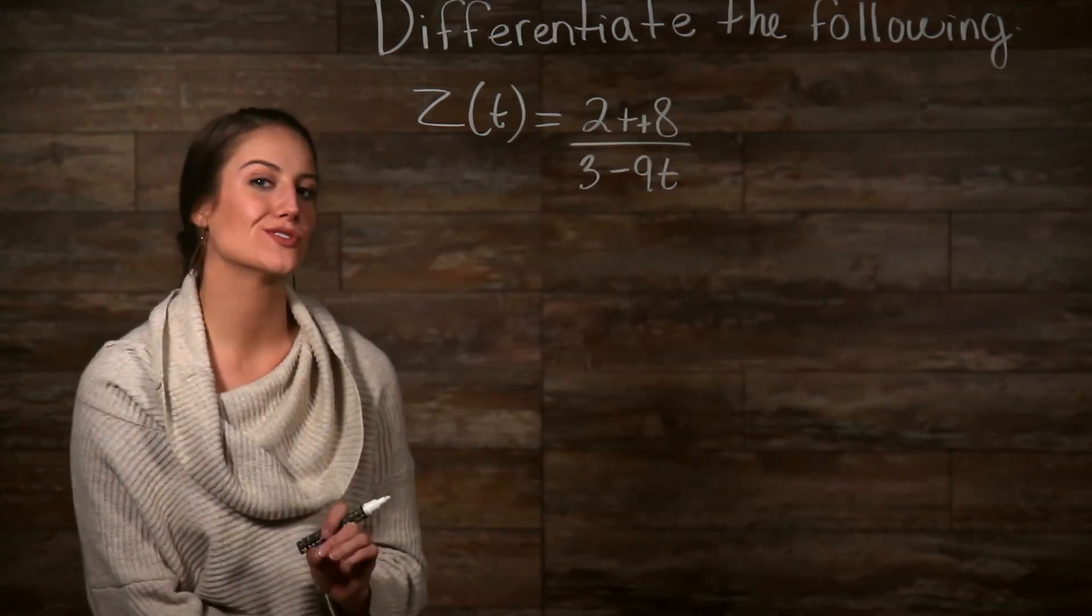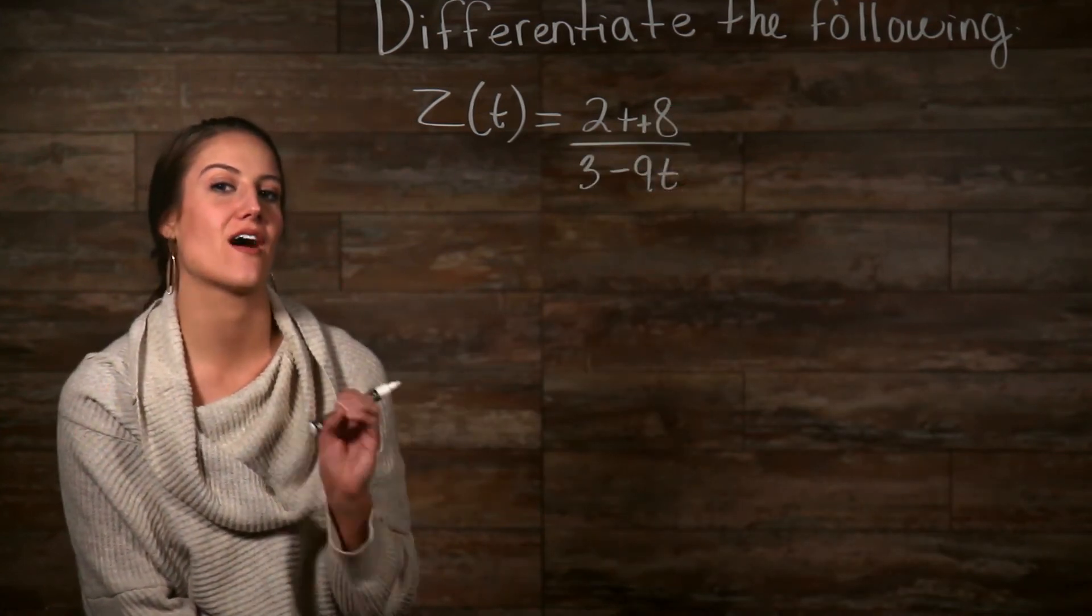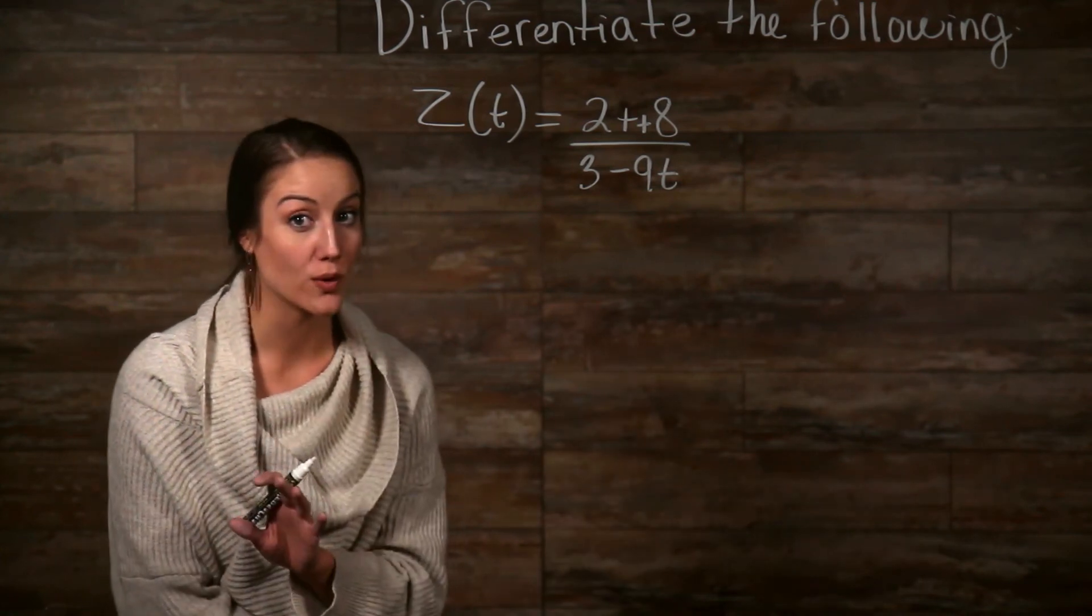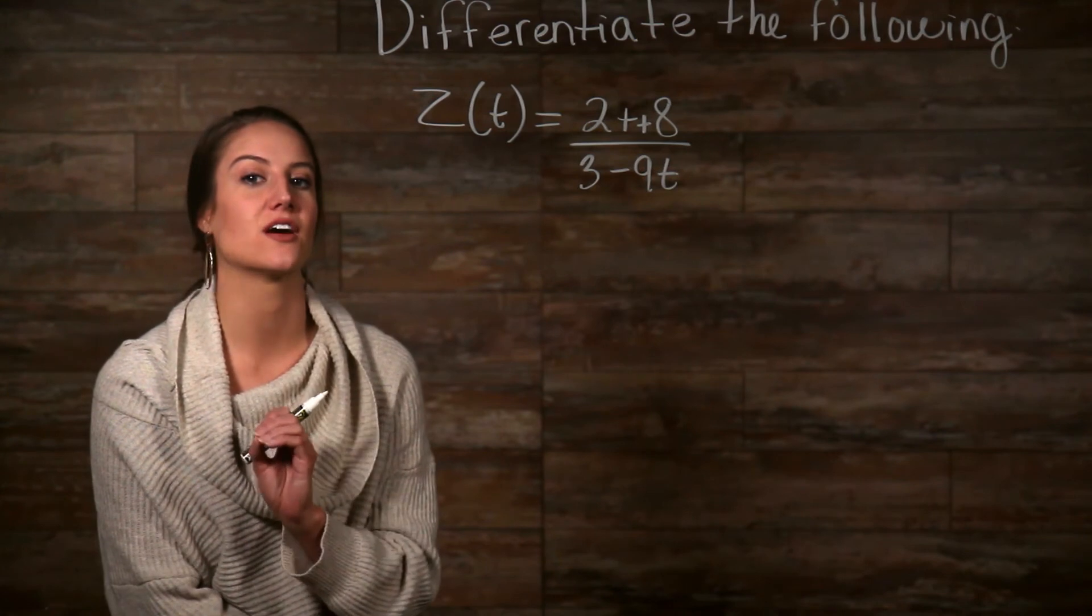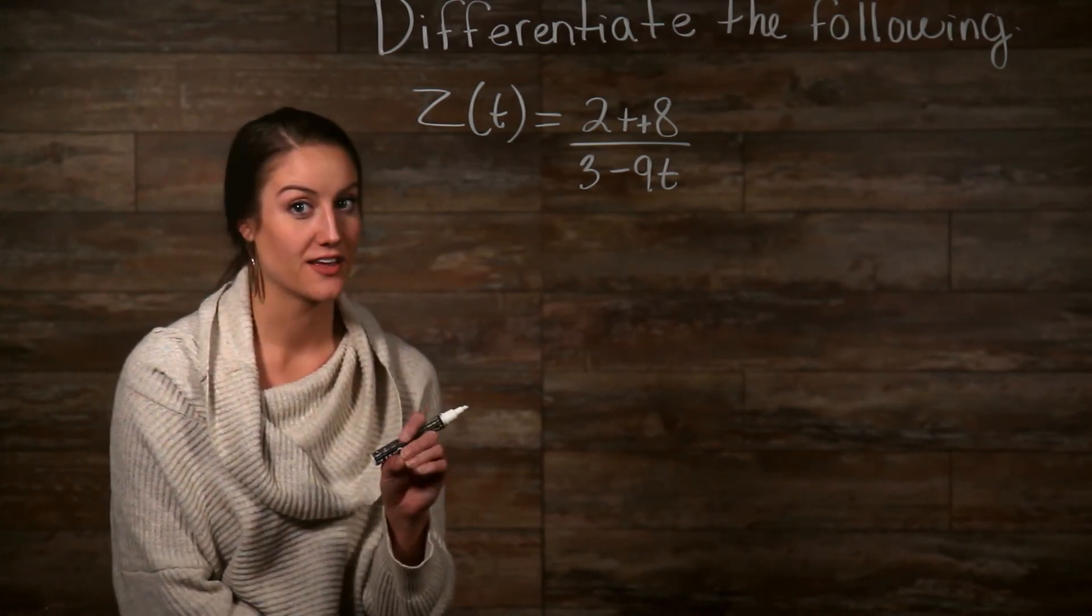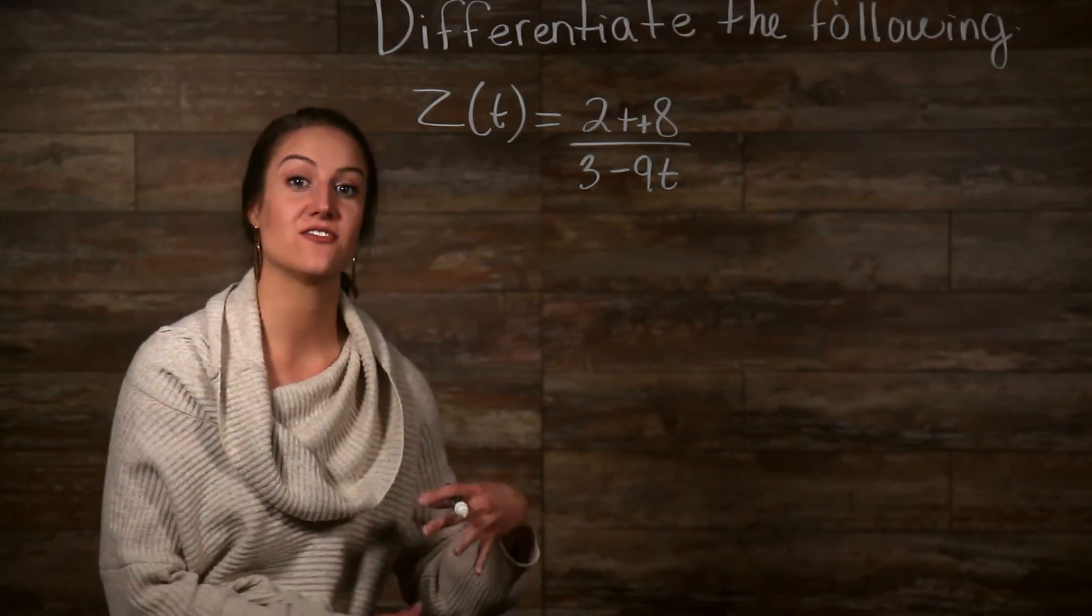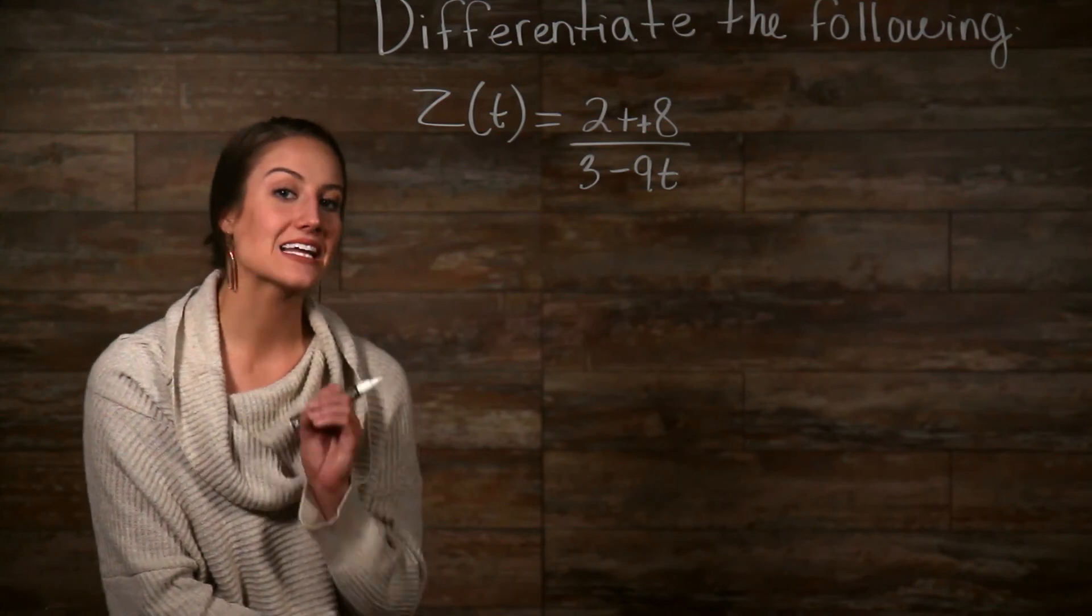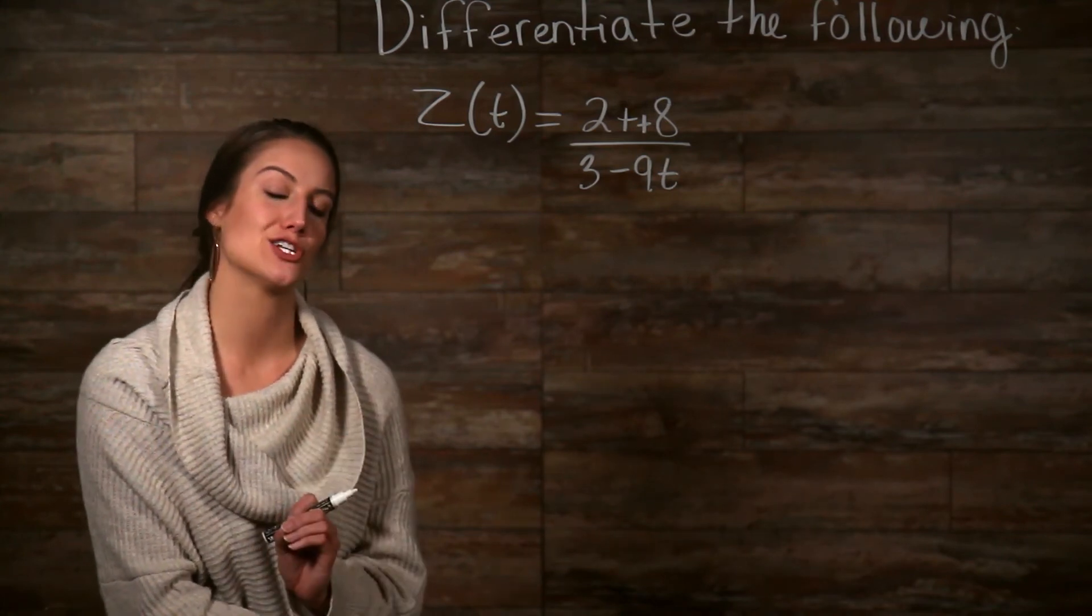So, our quotient rule tells us to take the derivative of the numerator, multiply it times the denominator left alone, then subtract the product of the numerator left alone by the derivative of the denominator. Then, finally, to divide all of this by the denominator squared. Let's start by writing out exactly what the quotient rule is telling us to do.